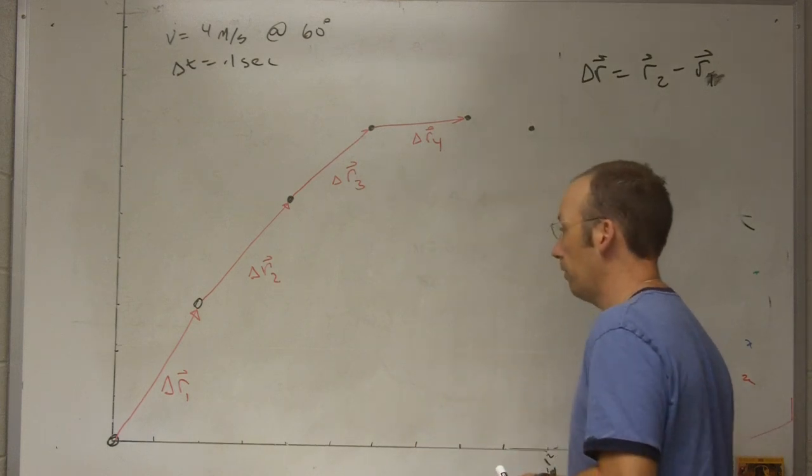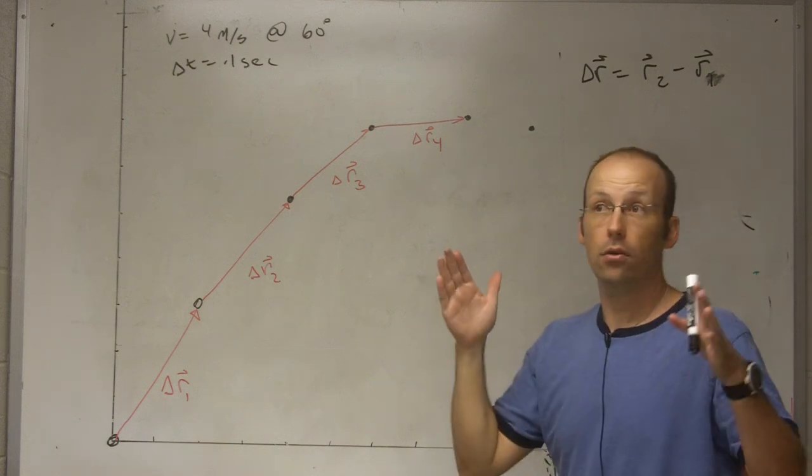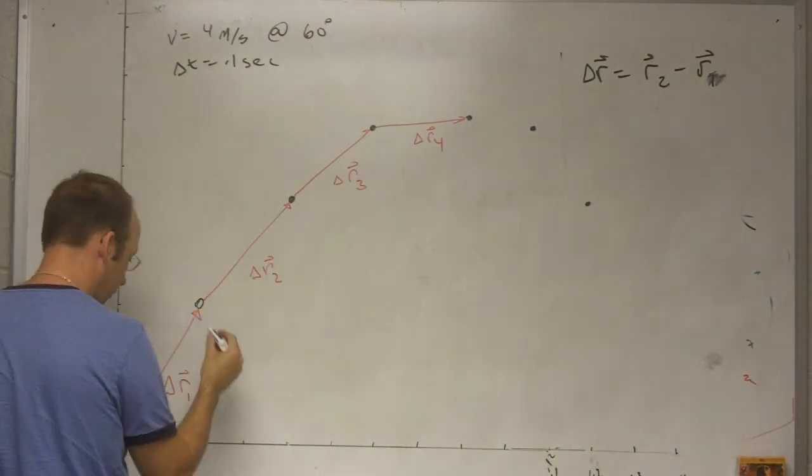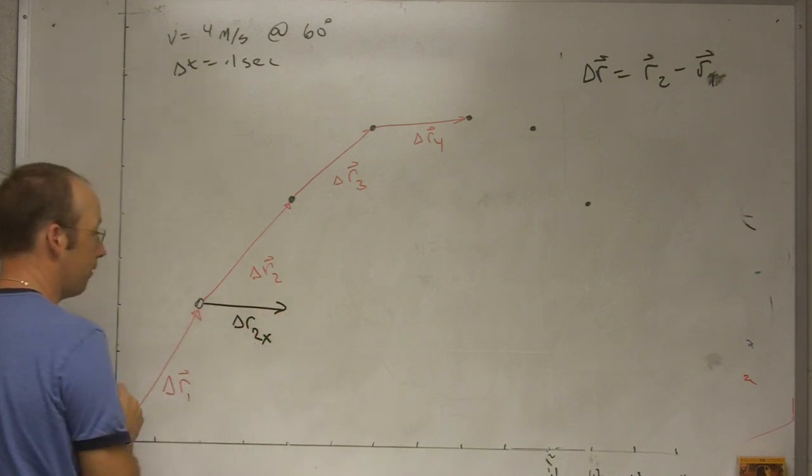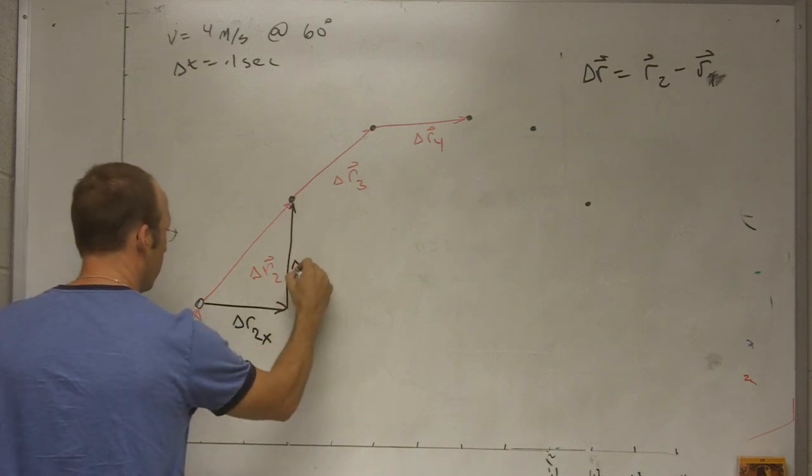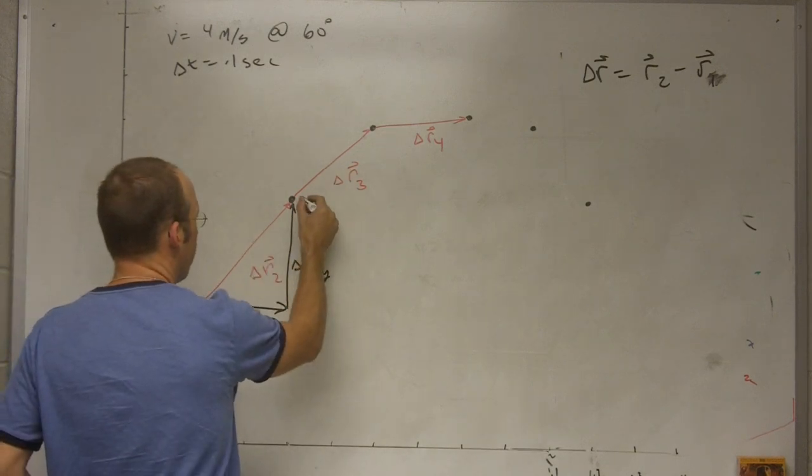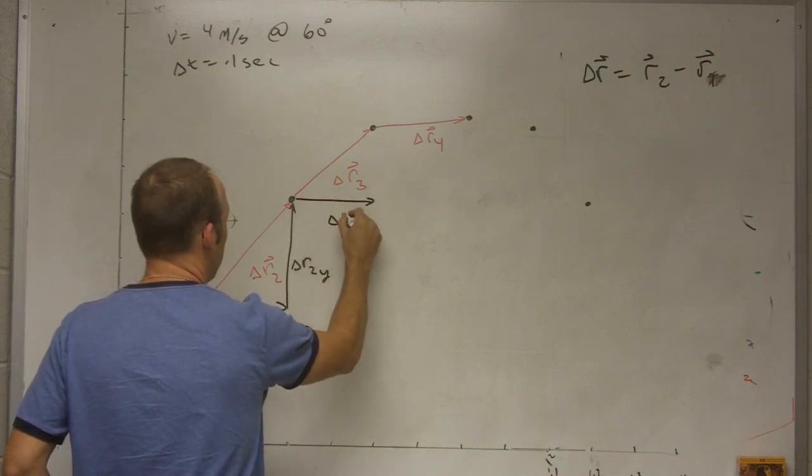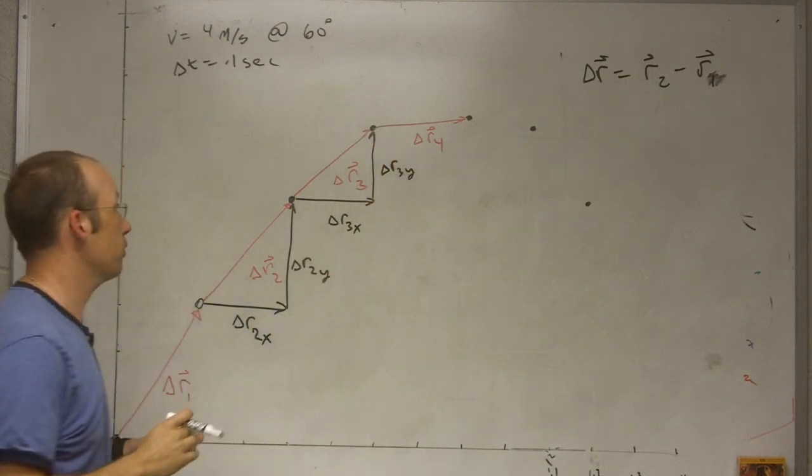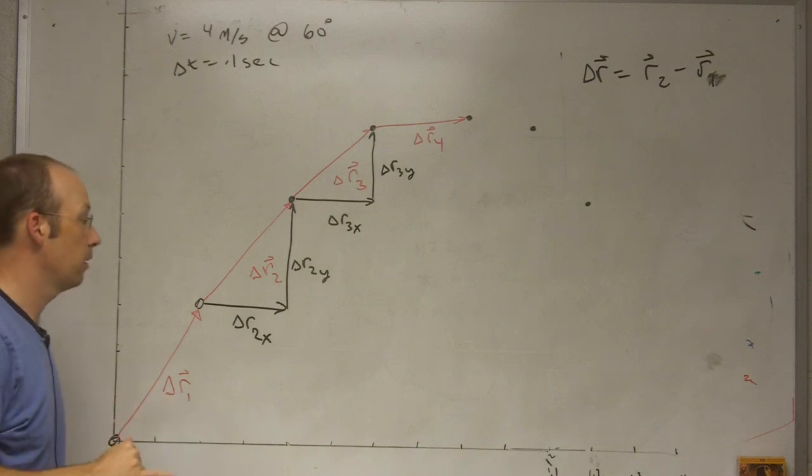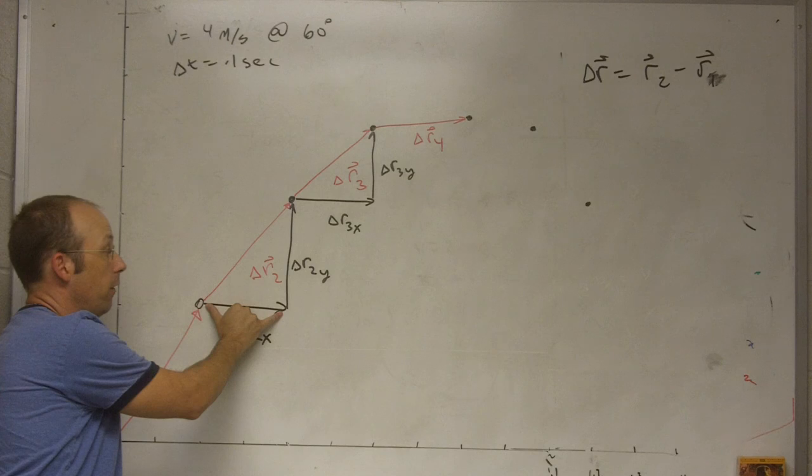So let's look at what happens for each of these displacement vectors during the same amount of time. Let me just take delta r2 and break it into an x and a y component. So this would be delta r2,x. That's the x component of it. And this is delta r2,y. Let me do it for the next one too. In that next tenth of a second, I have delta r3,x and delta r3,y. Now let me show you something cool.